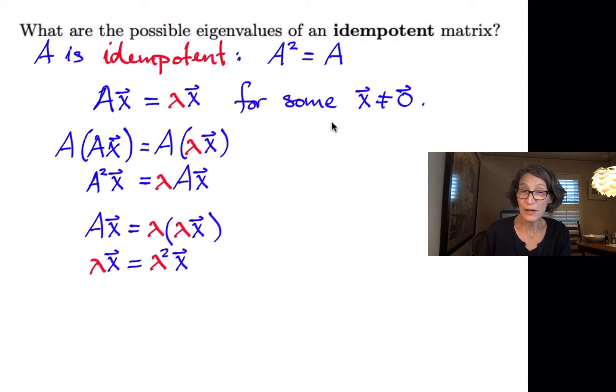Okay, so we're trying to figure out what lambda is. Let's get everything on one side of the equation. So I can write lambda squared X minus lambda X is the zero vector.